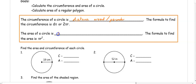The area of a circle is the space it takes up or covers. To find the area, it is pi r squared.